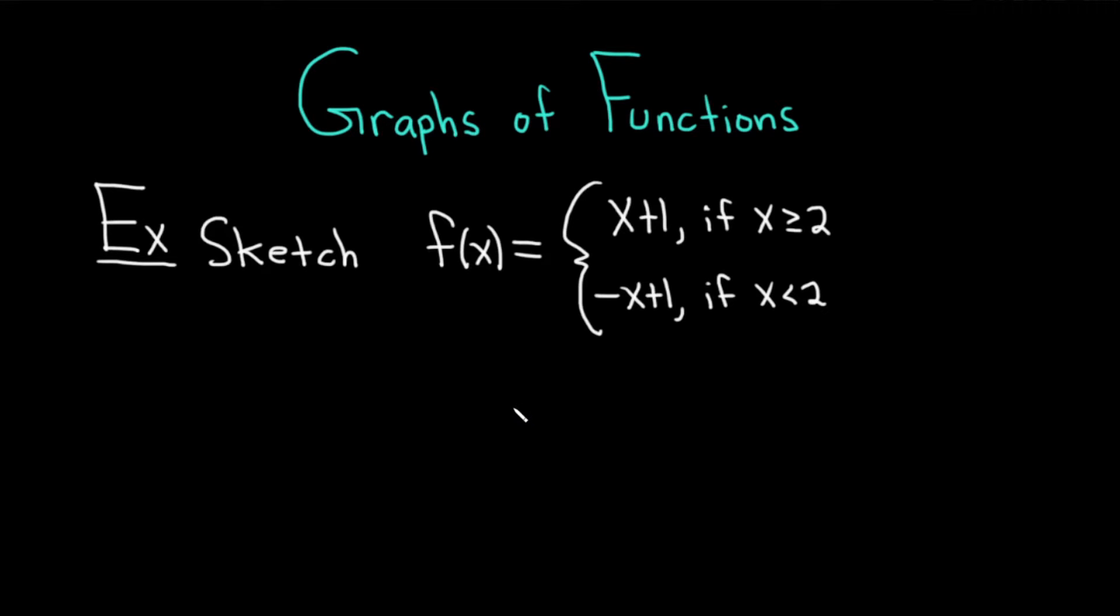Let's go ahead and do an example of sketching the graph of a piecewise function. So our piecewise function is f of x equals x plus 1 if x is greater than or equal to 2, and it's negative x plus 1 if x is less than 2.